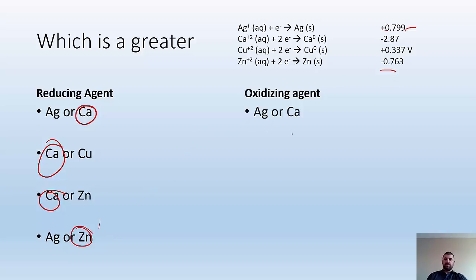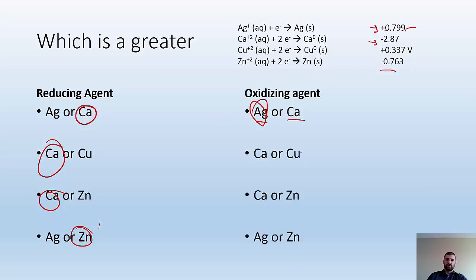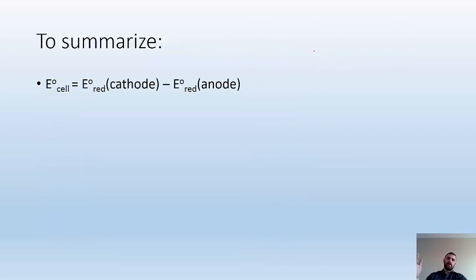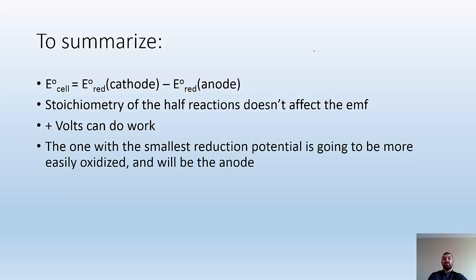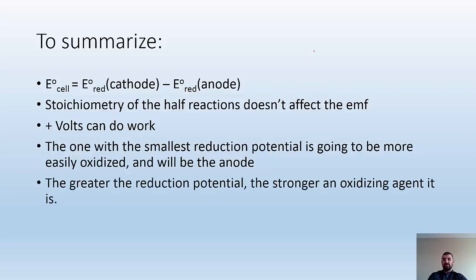For oxidizing agents, which one is more likely to be reduced? The one with the greater reduction potential. For Ag vs. Ca: Ag has the greater reduction potential, so Ag is the better oxidizing agent. For calcium vs. copper: copper has the greater reduction potential, so copper is the better oxidizing agent. To summarize: cell potential equals reduction potential of the cathode minus reduction potential of the anode. Stoichiometry of the half reactions doesn't affect EMF — ignore coefficients. Positive volts means the reaction can do work. The smallest reduction potential gets oxidized and is the anode. The greater the reduction potential, the stronger the oxidizing agent.